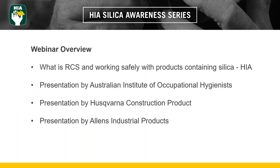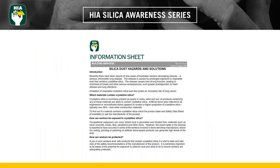This webinar is part of a five-part series. There is a presentation by the Housing Industry Association about what is respirable crystalline silica and how to work safely with products containing it. There's also a presentation by the Australian Institute of Occupational Hygienists, a presentation by Husqvarna Construction Products, and a presentation by Allen's Industrial Products. HIA has produced valuable resources freely downloadable from our website, including an information sheet on silica dust hazards and solutions.